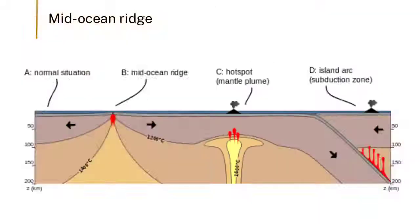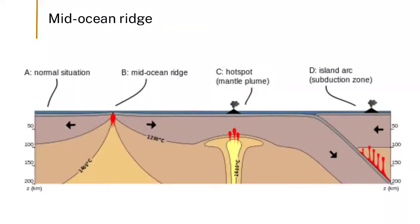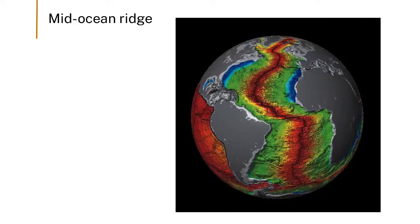This process continuously takes heat out of the Earth. The other place we do this is at the mid-ocean ridges — a great place to release heat and a big part of the convection. The most shallow place where the mantle comes up and melts due to decompression is the mid-ocean ridges.